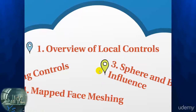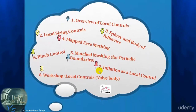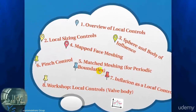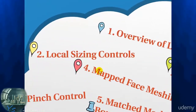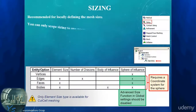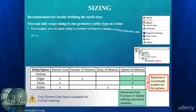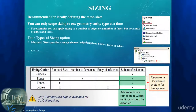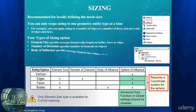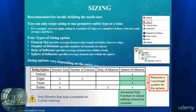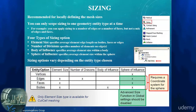The most important local control is sizing. One sizing can only be applied to one entity type at the same time. To specify the same element size on edges and faces, at least two sizings are required.